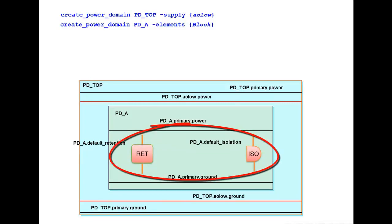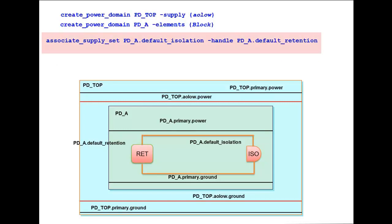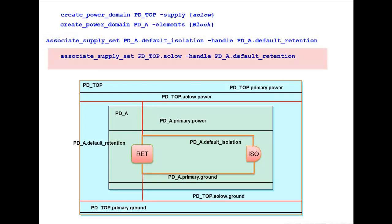In this example, let's assume the default retention and isolation share common voltage characteristics of the supply pdtop.aolo. For that, first we associate pda.default_retention to pda.default_isolation using the command: associate_supply_set pda.default_isolation -handle pda.default_retention. Next, we associate these supply handles to pdtop.aolo using: associate_supply_set pdtop.aolo -handle pda.default_retention.